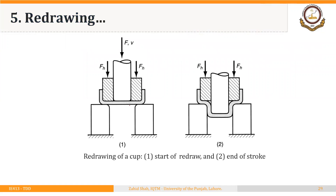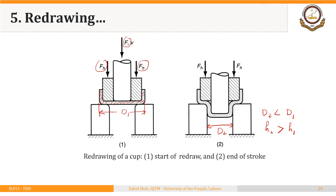This is a simple illustration to understand what is meant by redrawing. We have a shell that has already been drawn using a drawing operation, and we are drawing it again. You draw the cup again into a die that has a smaller diameter than the starting diameter of the shell. So if you call the starting diameter D1 and the new diameter D2, then D2 is smaller than D1, and the height H2 after redrawing will be greater than H1.